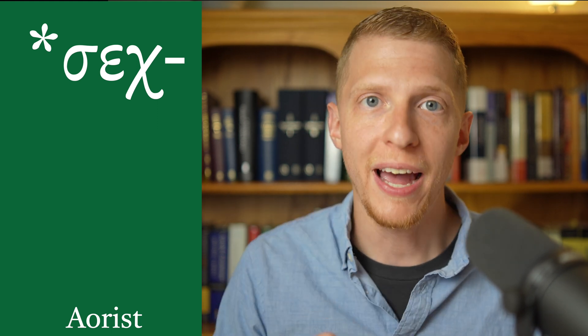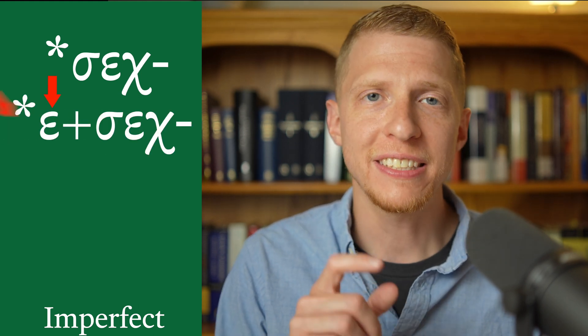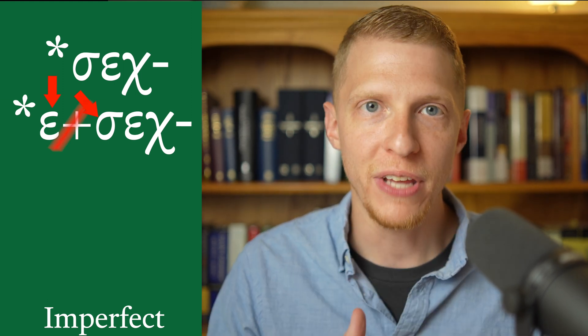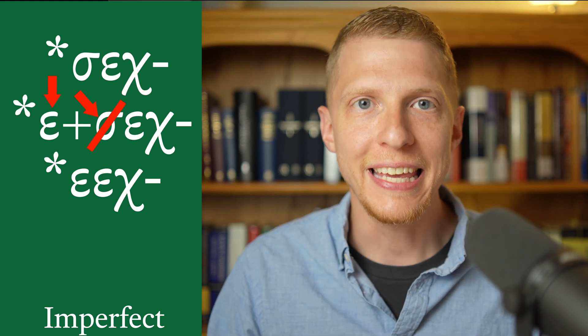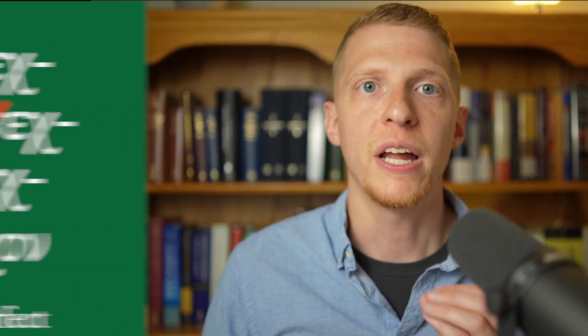Mounce further describes that for the aorist, instead of the root σεχ, the epsilon in between the sigma and the kappa drops out, so the root becomes just sigma-kappa. We then add the augment and the second aorist endings to get ἔσχον. The same thing happens in the perfect, with the only addition of the eta after the sigma and the kappa. For the imperfect form, you have your root σεχ and we add the augment. That sigma is between two short vowels — called an intervocalic sigma — and it drops out. So you have epsilon, epsilon, kappa, and those two epsilons combine and contract into the diphthong αι, giving εἶχον.